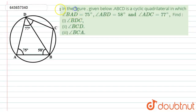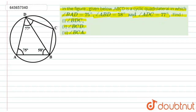In the figure given below, ABCD is a cyclic quadrilateral in which angle BAD is equal to 75 degrees, angle ABD is 58 degrees, and angle ADC is 77 degrees. We need to find angle BDC, angle BCD, and angle BCA.